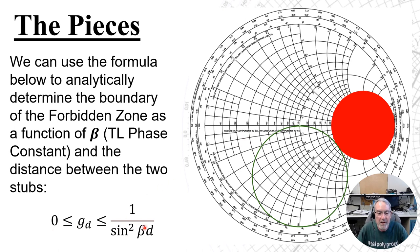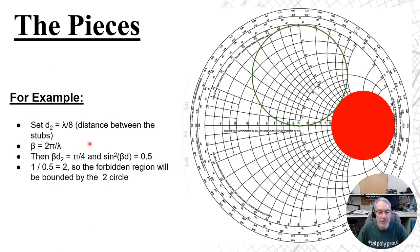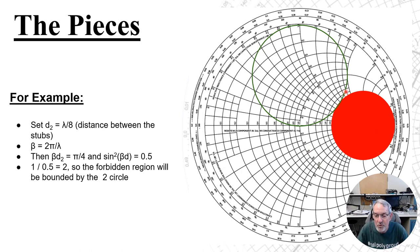We can use this formula to analytically determine the boundary of the forbidden zone as a function of beta — the transmission line phase constant — and the distance between the two stubs. For example, if our d2 is lambda over 8, our beta is given as 2 pi over lambda. Beta d2 ends up being pi over 4 and sine squared beta d ends up being 0.5. 1 over 0.5 equals 2, so the forbidden region will be bounded by the 2 circle, or in terms of admittance, the 1 half circle — it's the same point either way.